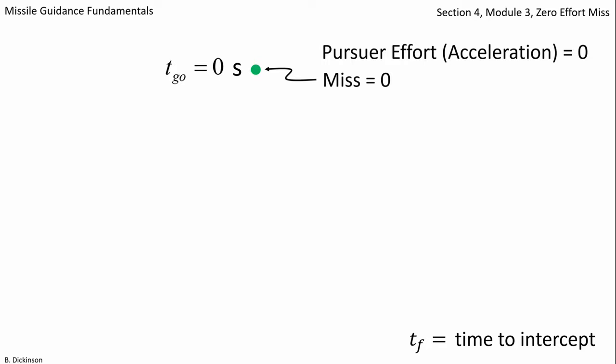The miss that resulted is also zero because the pursuer and target were initially on a collision course, so we say that the zero effort miss is zero.